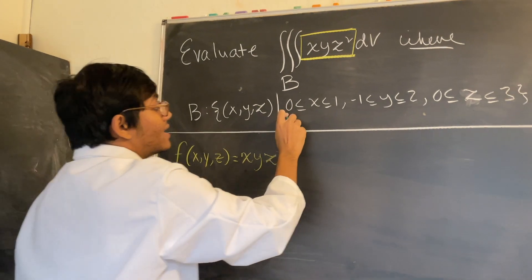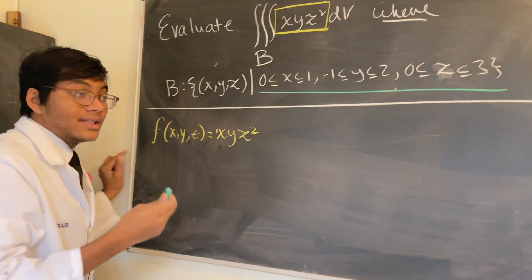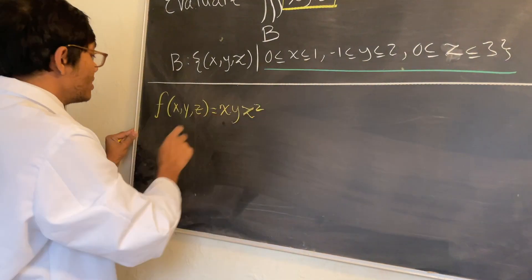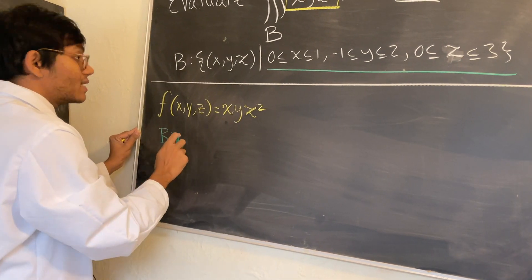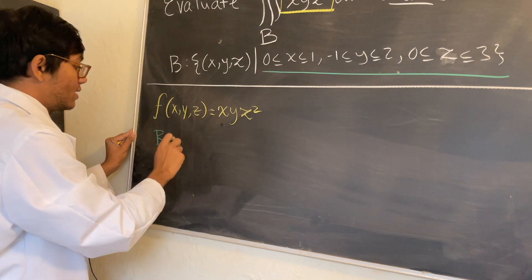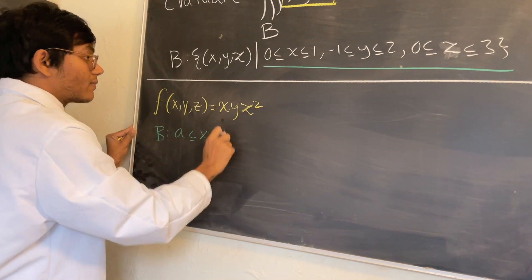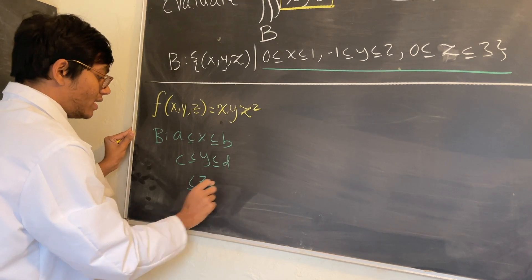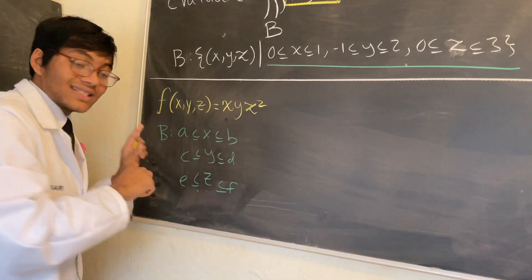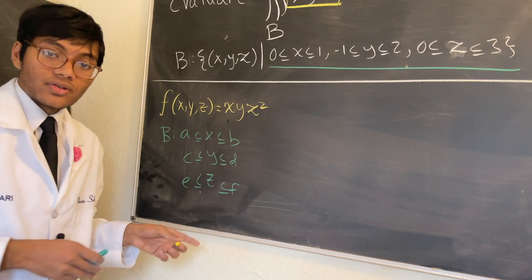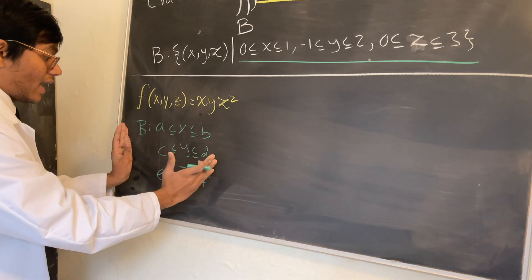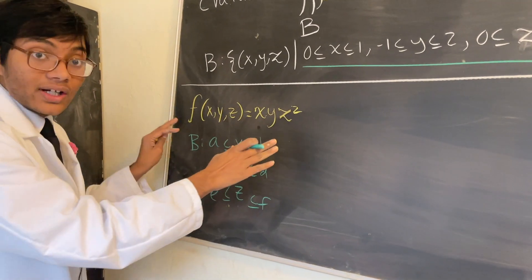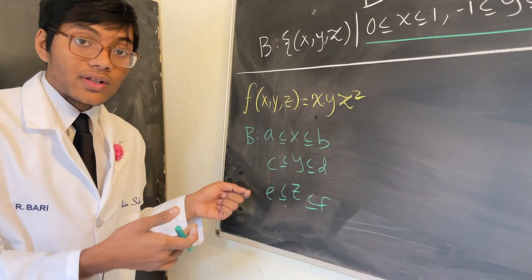This is the first thing we're dealing with, our function. What's the second thing? The second thing is the region, or in this case the volume. The volume here is the set of all points where X is between A and B, Y is between C and D, and Z is between E and F. This is the simplest case you can have for triple integrals.